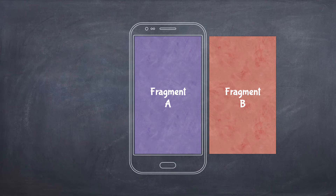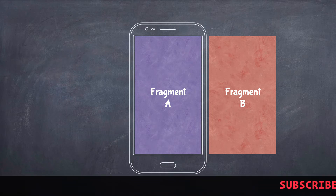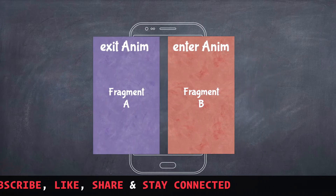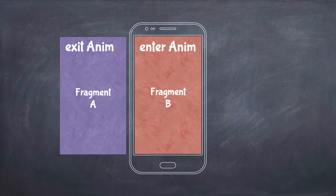Suppose we have our main activity currently showing Fragment A, and there's a button that takes you to Fragment B. When you click that button, the exit animation is applied to Fragment A as it goes out from the main view, and the enter animation is applied to Fragment B as it comes into the foreground as the currently active fragment.